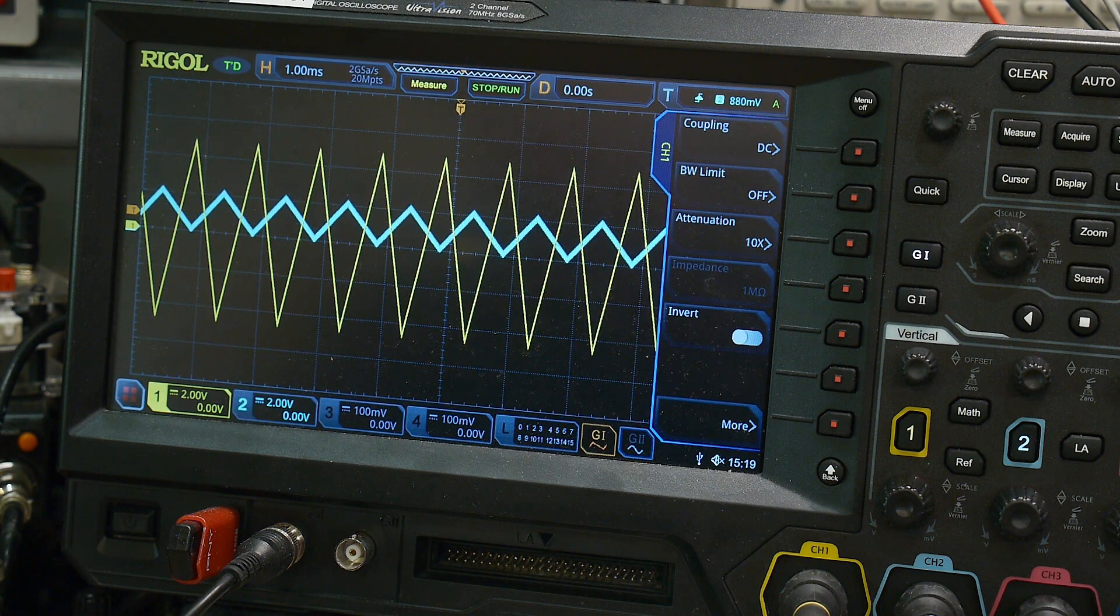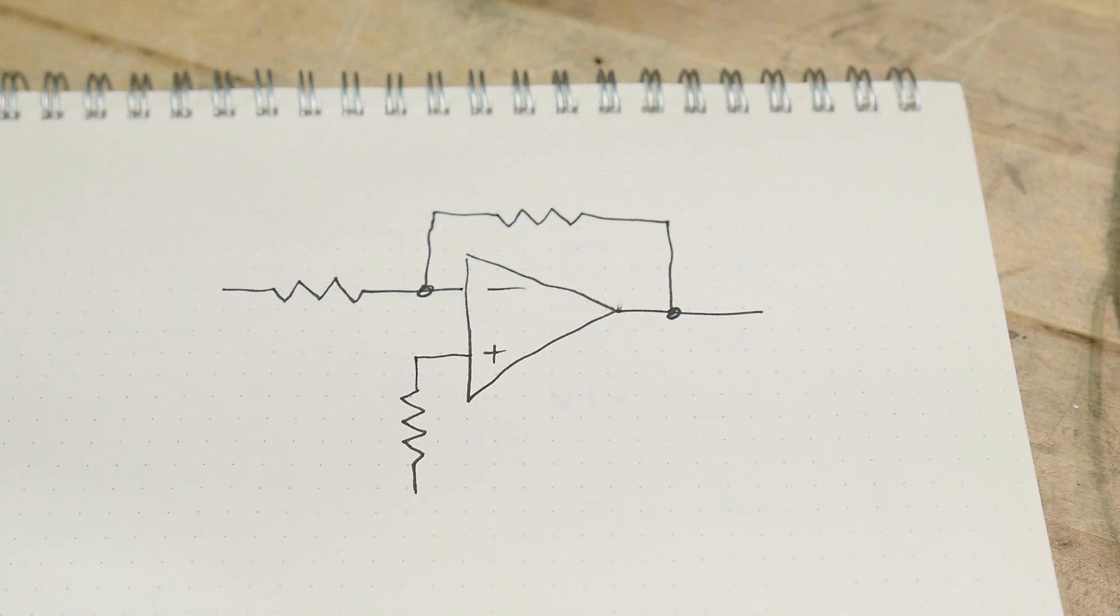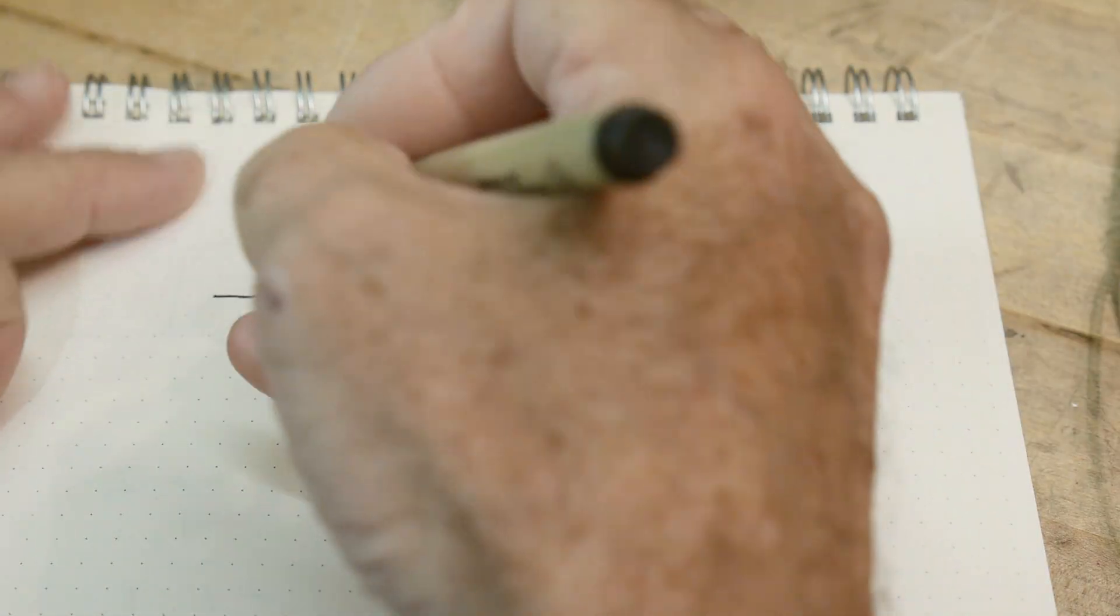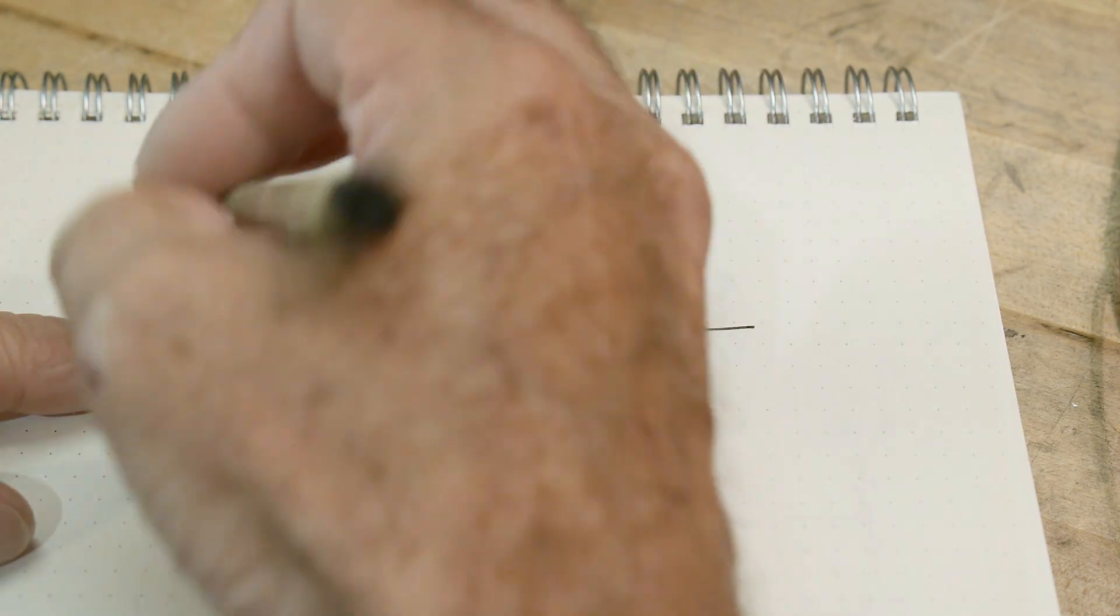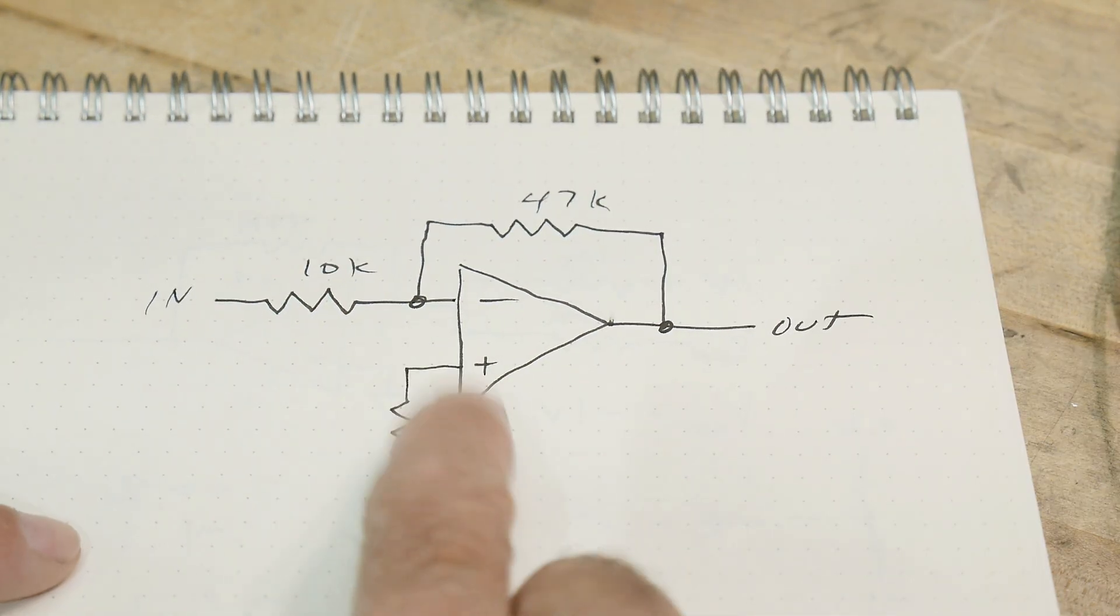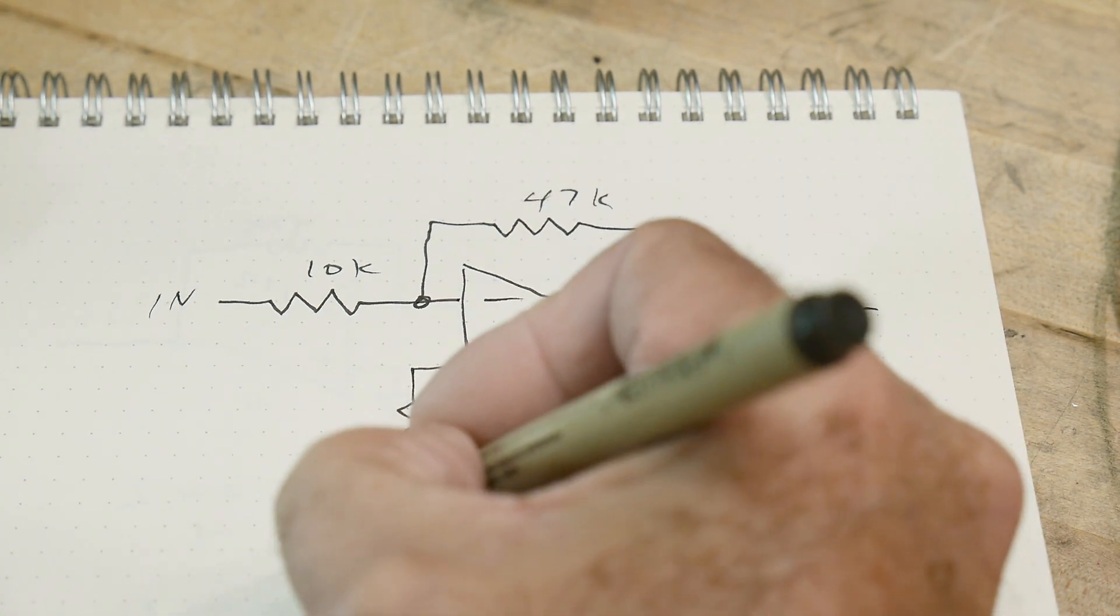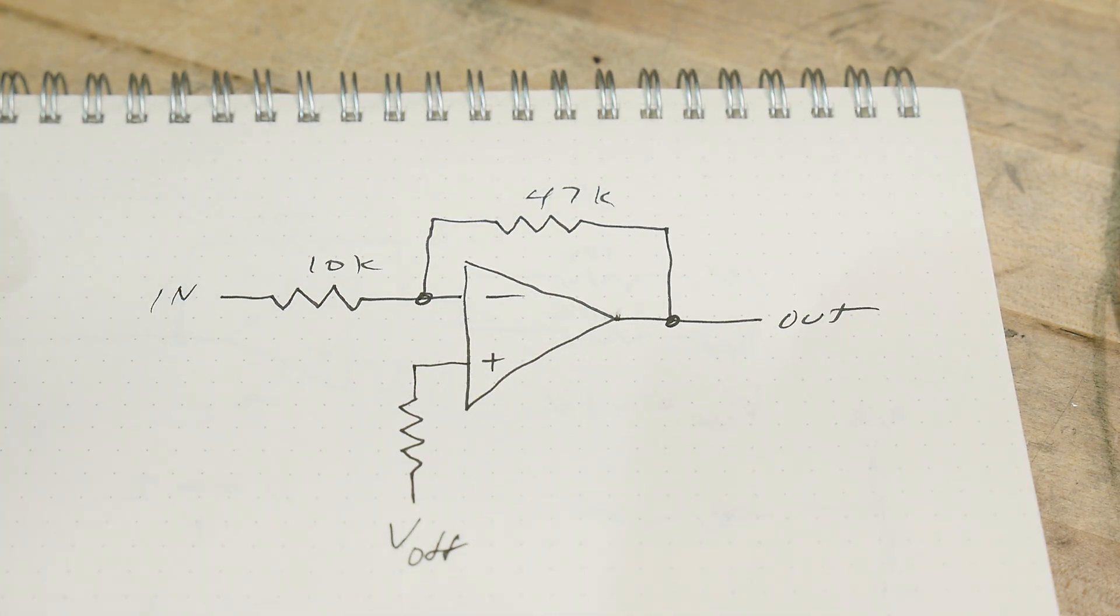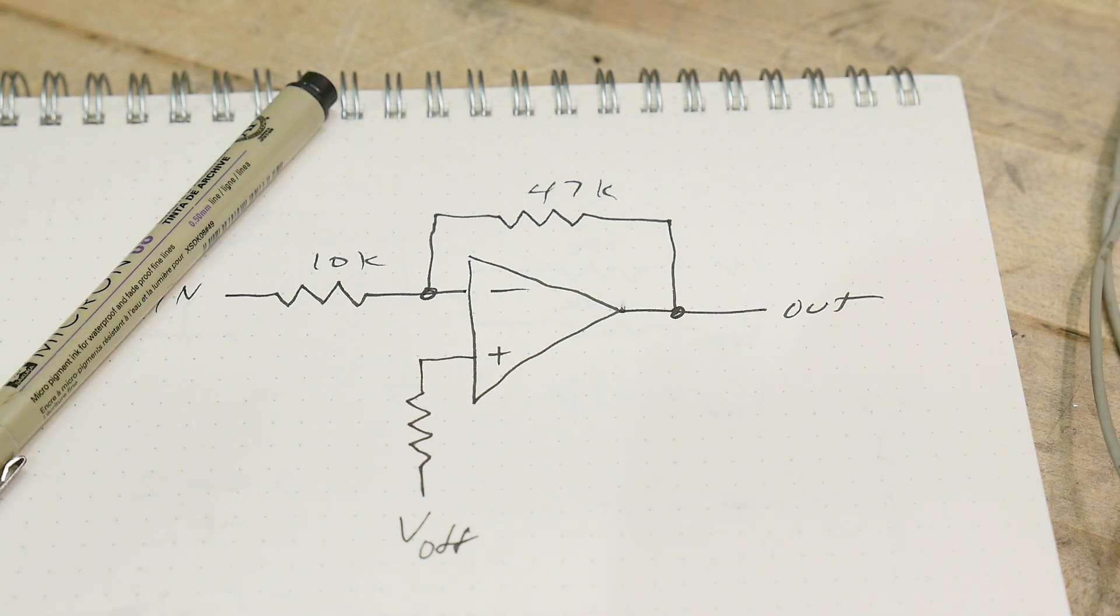Let's take another way to add offset. That is a summing summation, this is actually adding offset. So again we're going to have 10k and 47k, here's our in and this is our out. But now instead of having this grounded, which normally you would have the plus grounded, we're going to put a signal down here. We're going to pin it at the offset. So let's go ahead and wire that one up. I just have to change a couple wires here.